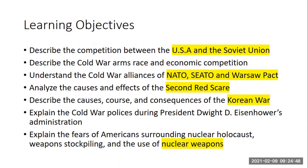We form some Cold War military alliances. The one that the United States forms is called NATO. It's with our European allies, and it means North Atlantic Treaty Organization. SEATO we form in Southeast Asia. And the Soviets and their communist satellite countries form their own alliance called the Warsaw Pact.